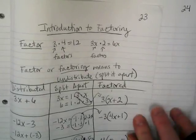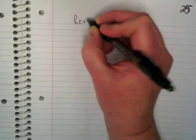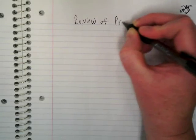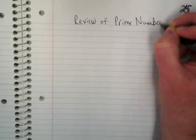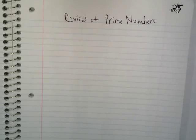On page 23 we did some introduction to factoring, and I've discovered that some people need a review of prime numbers, so let's go through what that means. On page 25, review of prime numbers — we're going to find a couple of different ways to factor prime numbers and break numbers into their parts down to just their prime numbers.